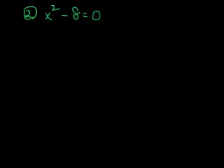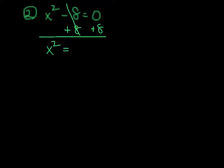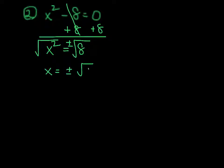Similarly with number 2, we're going to do the same thing that we did in number 1 — everybody should be taking notes in their packet. So we're going to add 8 to both sides, and we're going to get x squared equals 8. Again, to get rid of a square we take a square root, and don't forget, any time you take a square root we need a plus or minus. So that gives us x equals plus or minus radical 8.